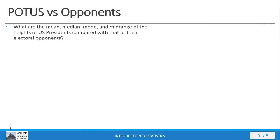Let's practice what we've learned in this and previous mini lectures by comparing the mean, median, mode, and mid-range of the heights of elected US presidents with that of their electoral opponents. Go ahead, pause the video here, get into the POTUS file in our StatCrunch group and calculate these values. Then come back here and we'll retrace the steps of how to do this and see how well you did.